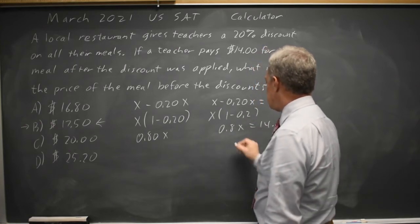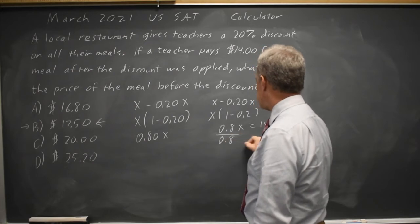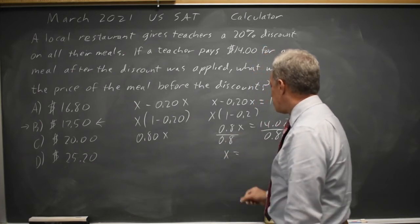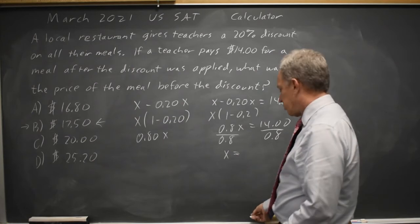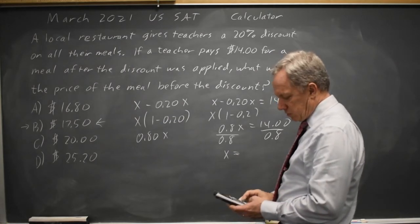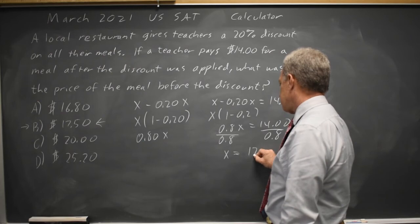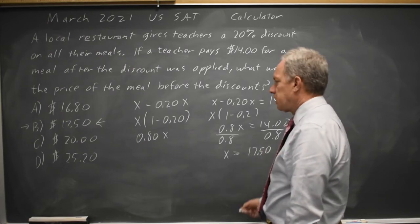Put the decimal in there. Divide both sides by 0.8. The original price of the meal is $14 divided by 0.8, which is $17.50. And again, I get choice B.